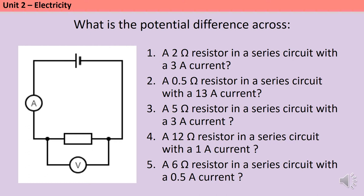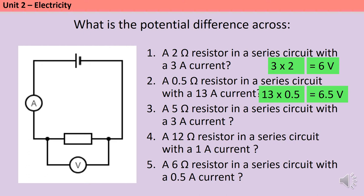Those are pretty simple but let's pause here so that you can have a go at doing these calculations for yourself. When you've worked out the 5 answers you can unpause and we'll go through the answers together. A 2 ohm resistor with a 3 amp current has a potential difference of 6 volts. A 0.5 ohm resistor with a 13 amp current has a potential difference of 6.5 volts. For question 3 you should have 15 volts, for question 4 twelve volts, and for question 5 three volts.